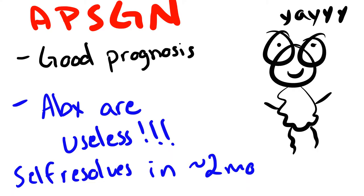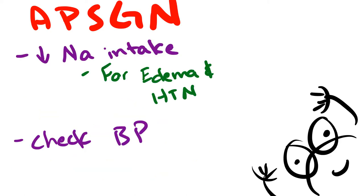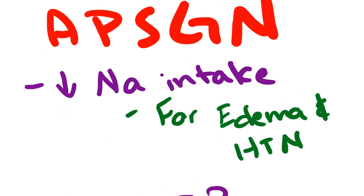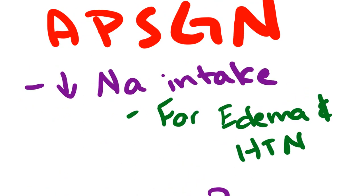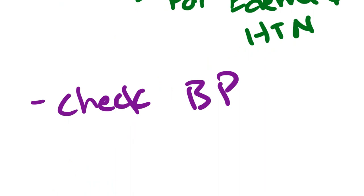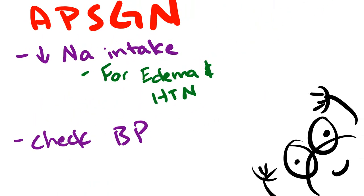Post-streptococcal glomerulonephritis has a pretty good prognosis. Antibiotics are useless because the damage is from a type III hypersensitivity reaction. For the initial phase, put them on a low sodium diet to help resolve the edema and hypertension, monitor blood pressure, and patients should return to baseline within about two months.